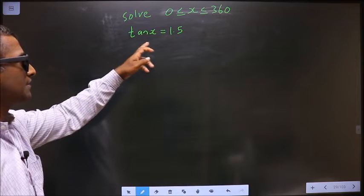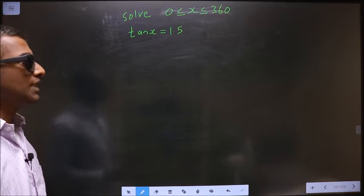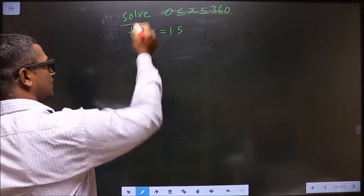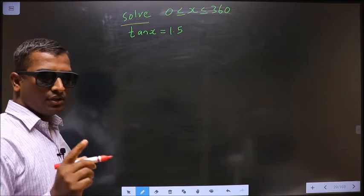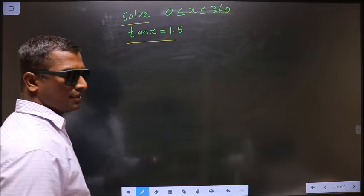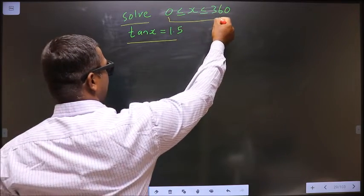Solve tan x equal to 1.5 where x lies between 0 to 360 degrees. They told you to solve, so you need to find the values for x satisfying this equation and also lying in this interval.